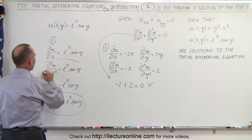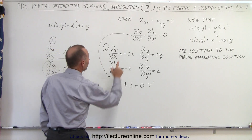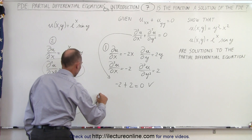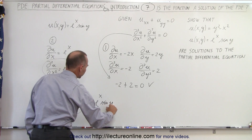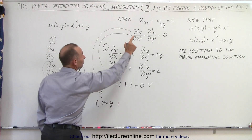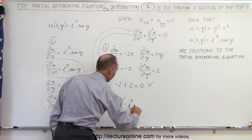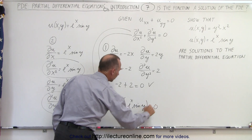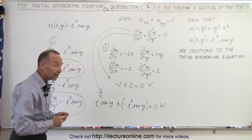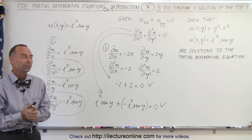When we plug the two results into our partial differential equation, we get the second derivative of u with respect to x, which is e to the x times the sine of y, plus the second partial derivative of u with respect to y, which is minus e to the x times the sine of y, and that equals zero. You can clearly see that these two terms are identical except for the minus sign. So it checks out, which means that both functions are indeed solutions to that partial differential equation. And that's how it's done.